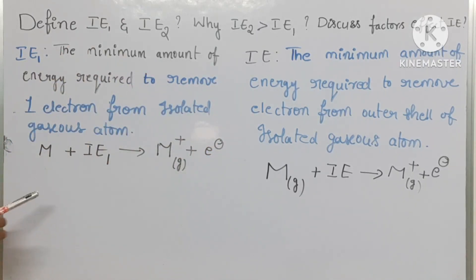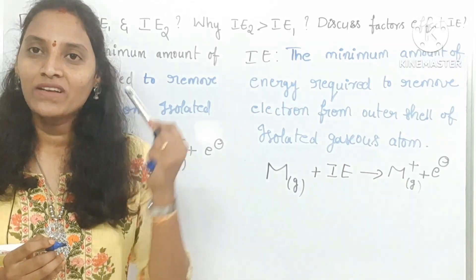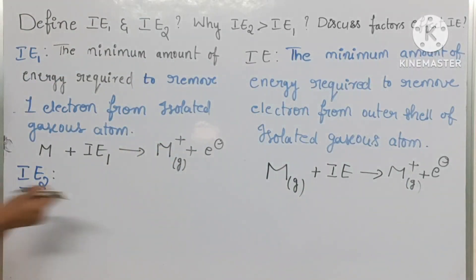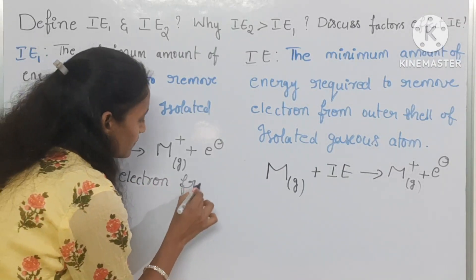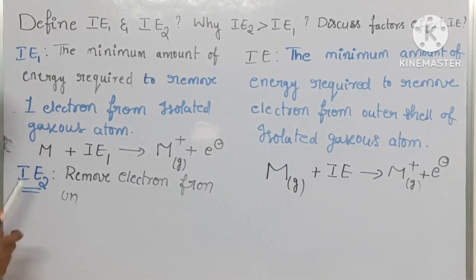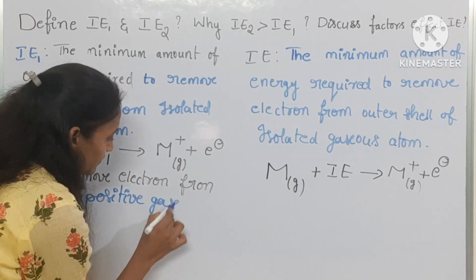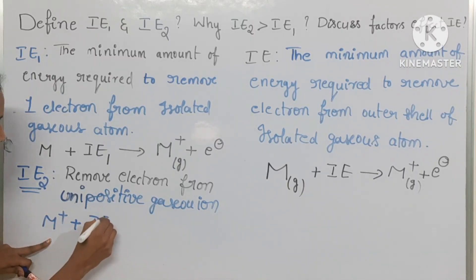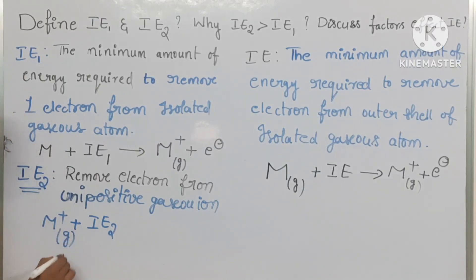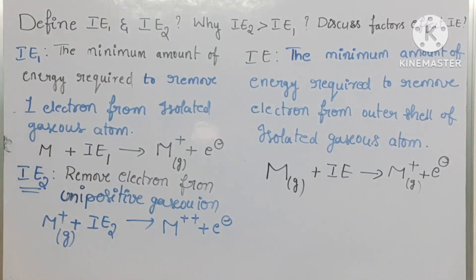IE is generally considered as IE1. IE2 is the minimum amount of energy required to remove one electron from an isolated unipositive gaseous ion. So you can write: M⁺ + IE2 → M²⁺ + one electron.